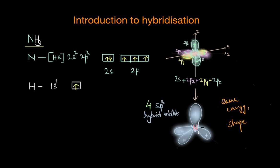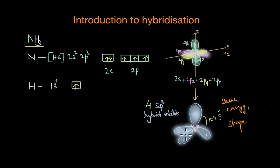These hybrid orbitals take up a tetrahedral geometry in space and the bond angle between them would be 109.5 degrees. This is because the orbitals arrange themselves to have the least amount of repulsion between them, assuming that each sp3 hybrid orbital contains at least one electron either as part of a bonding pair or as a lone pair. Think of 4 points in a sphere arranged as far from each other as possible — that gives us a tetrahedral geometry.